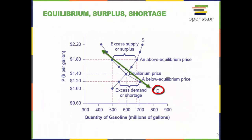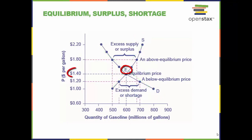The demand curve D and the supply curve S intersect at the equilibrium point E, with a price of $1.40 and a quantity of 600. The equilibrium is the only price where quantity demanded is equal to quantity supplied. The price and quantity that make up the equilibrium point are referred to as equilibrium price and equilibrium quantity.